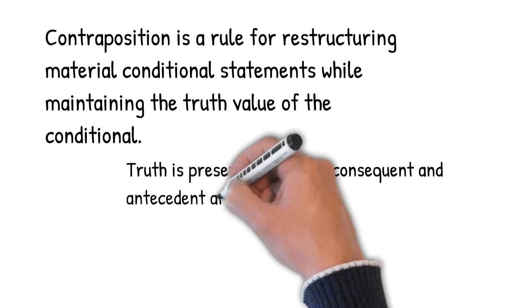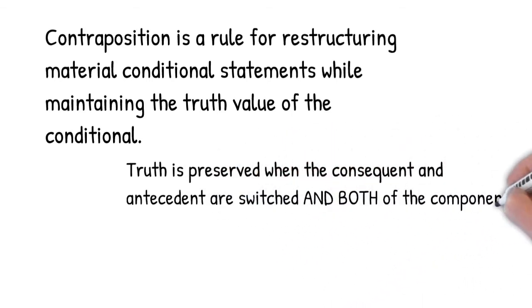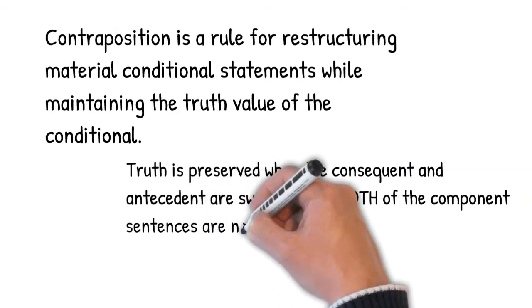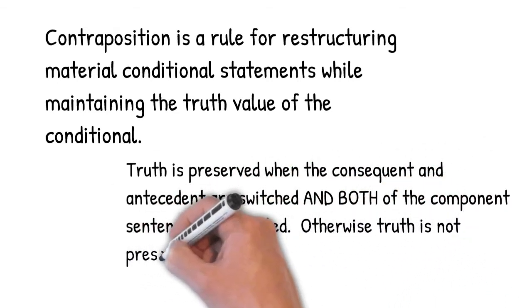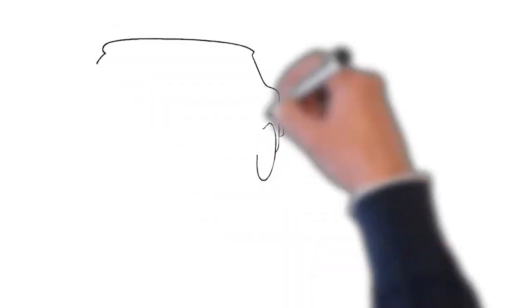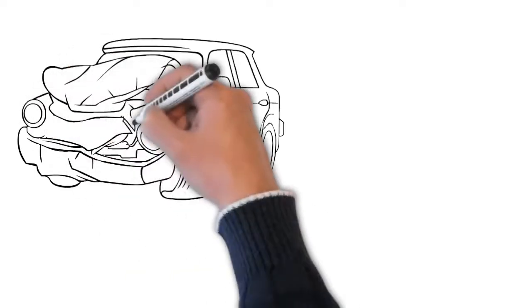In these cases, truth is preserved when both the consequent and the antecedent are switched, and both of the component sentences are negated. Otherwise, truth is not preserved. So you can't be willy-nilly with how you are manipulating these statements.